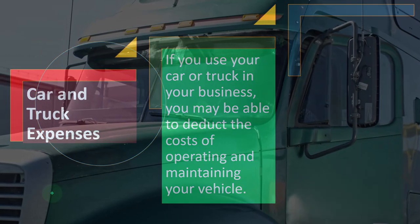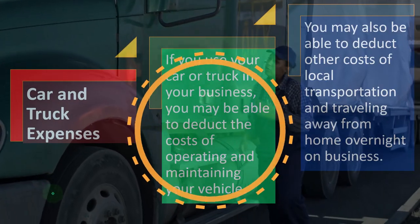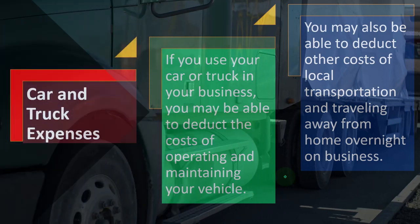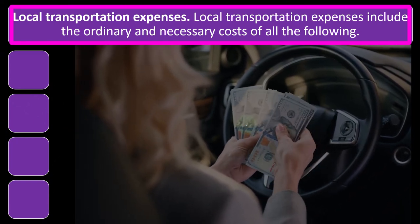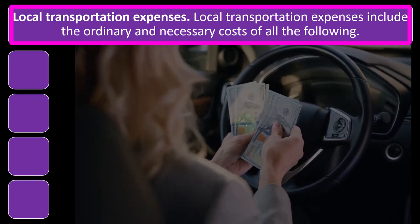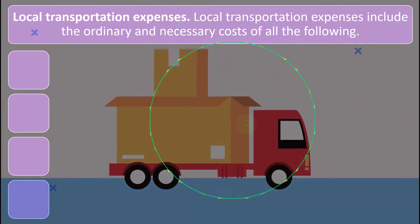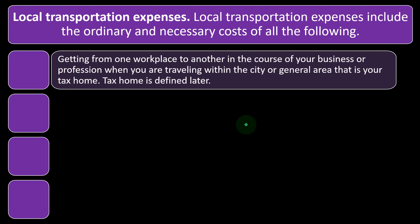Car and truck expenses: if you use your car or truck in your business, you may be able to deduct the costs of operating and maintaining your vehicle. You may also be able to deduct other costs of local transportation and traveling away from home overnight on business. Local transportation expenses include the ordinary and necessary costs of all of the following. When looking at deductions related to a sole proprietor Schedule C type of business, we often see the term 'ordinary and necessary' for expenses — basically deductions on the Schedule C — which are the expenses needed to help generate the revenue.